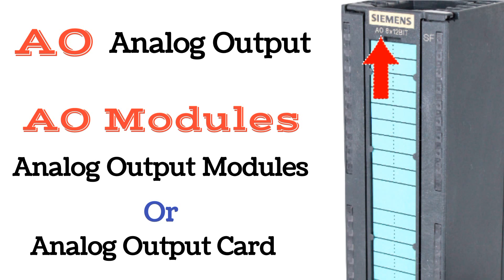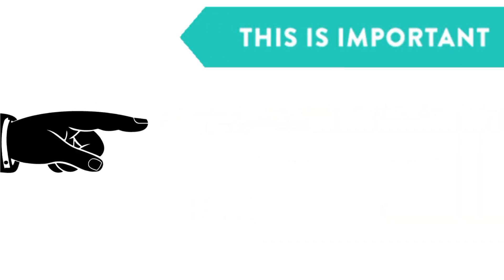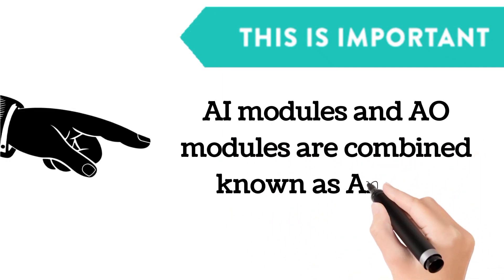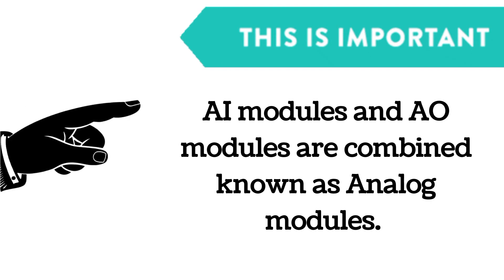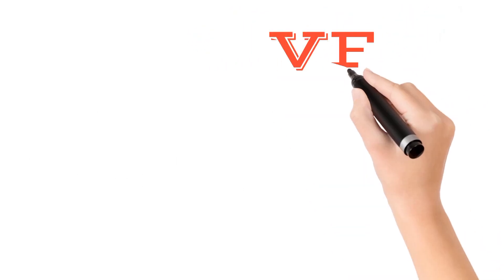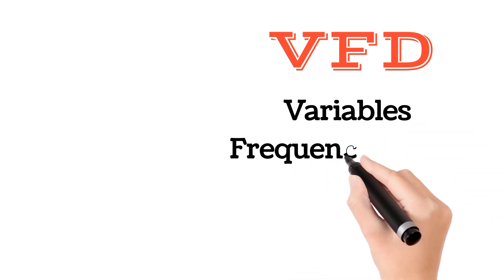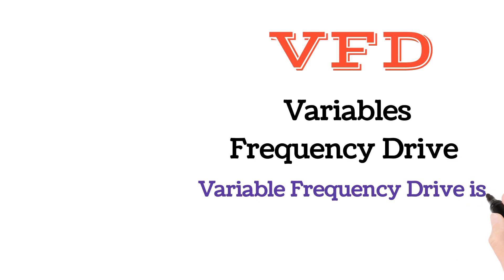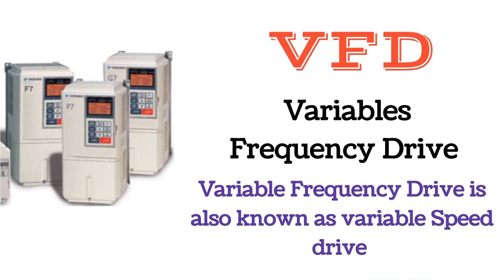AO is written on analog output modules as shown by the arrow. One important point: AI modules and AO modules are combined and known as analog modules. VFD means variable frequency drive, also known as variable speed drive.